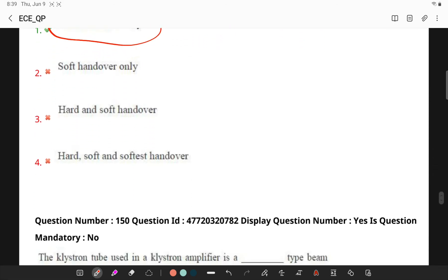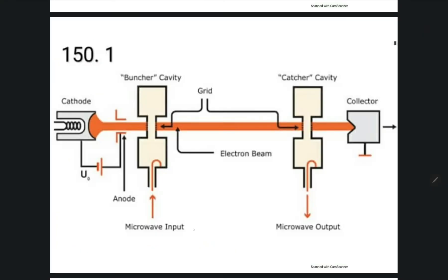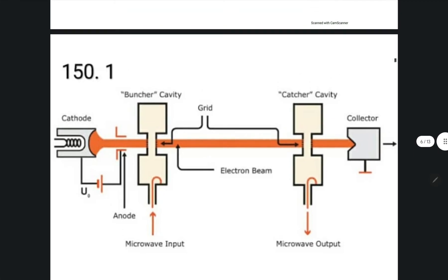Next question. Klystron tube used in a klystron amplifier is which type of beam? So to understand this particular problem, if you observe, you will be having a linear beam which is in this klystron amplifier.